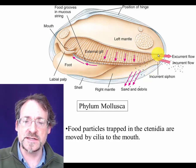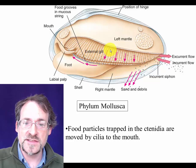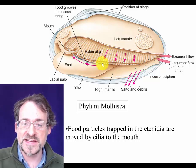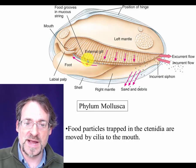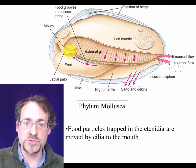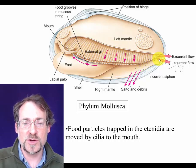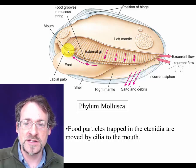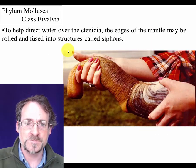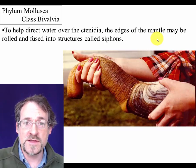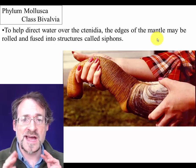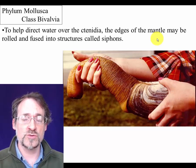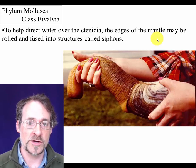Cilia trap food particles and pass them to the edge of the gill or ctenidia. From there those food particles are passed in a bolus of mucus to the mouth, so a mussel is constantly taking in small particles and shuttling them to its mouth. Often there are tubes of mantle tissue extending out of the shells that help direct water in and out.